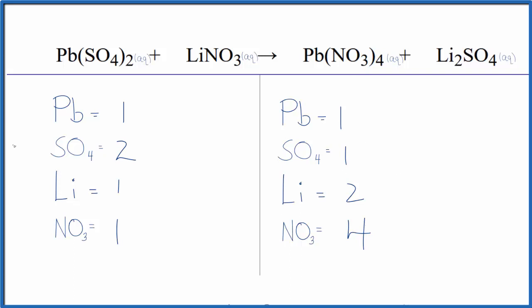Let's start by balancing the sulfate ion here. We have two here and just one over here. So I'll put a two here. So the one sulfate times two, that'll give me two. Those are balanced,